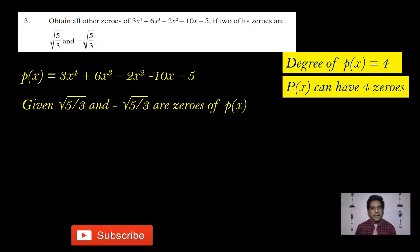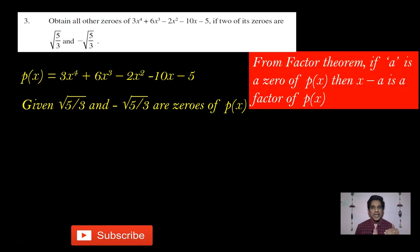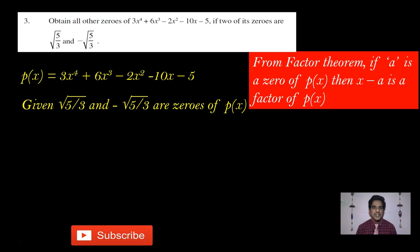The two given zeros are √(5/3) and -√(5/3). If you know the zeros of a polynomial, you can find a quadratic polynomial. According to the factor theorem, if a is a zero of the polynomial, then x - a is a factor of p(x). So if √(5/3) is a zero, then x - √(5/3) is a factor.